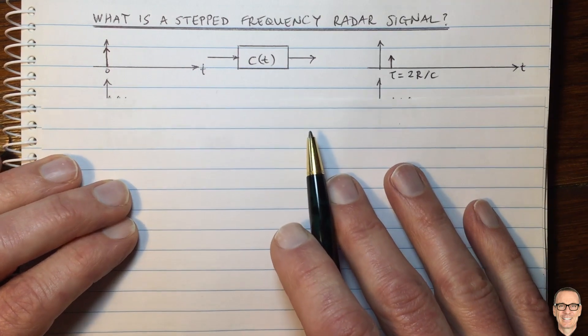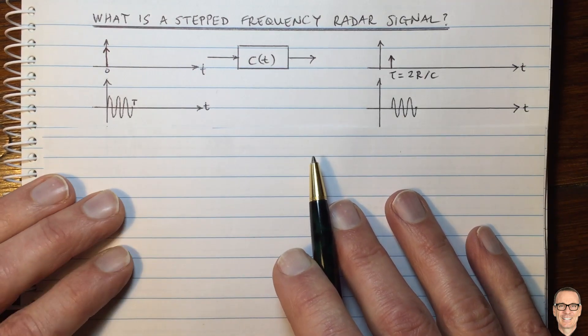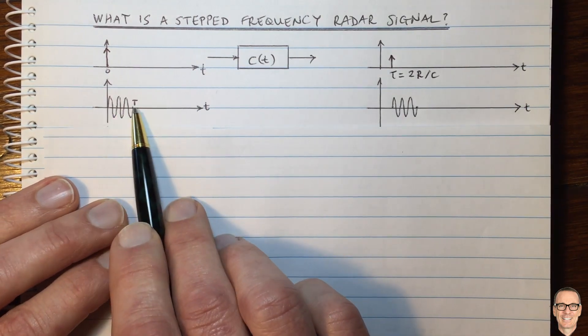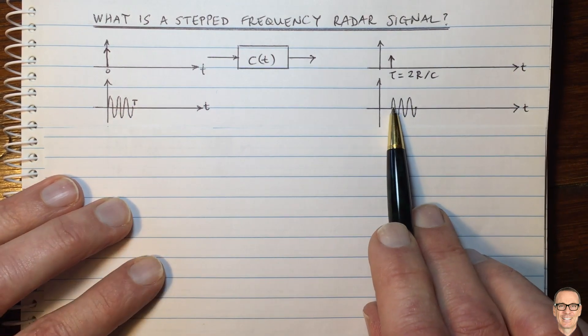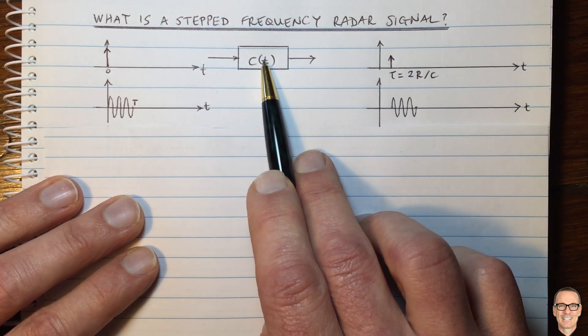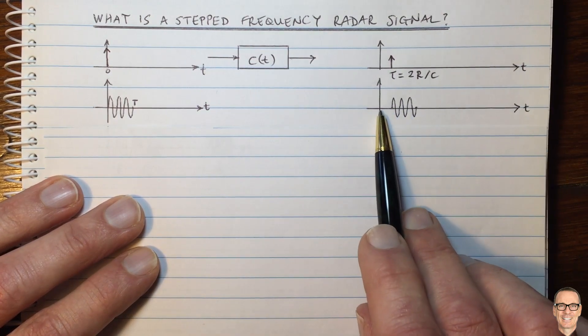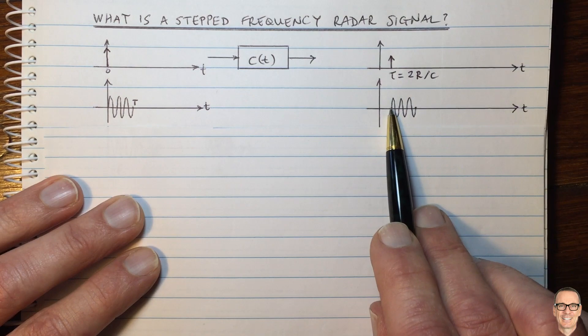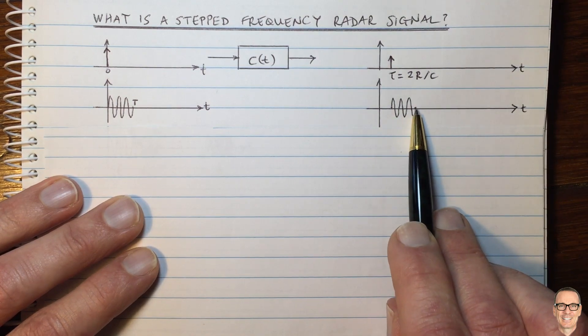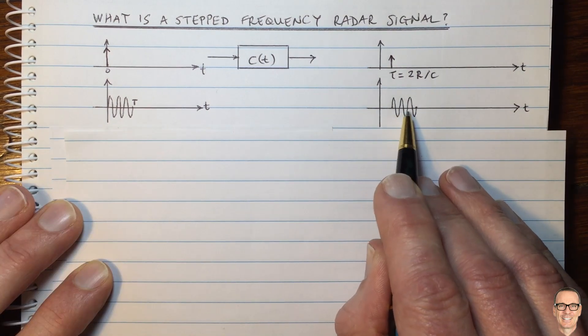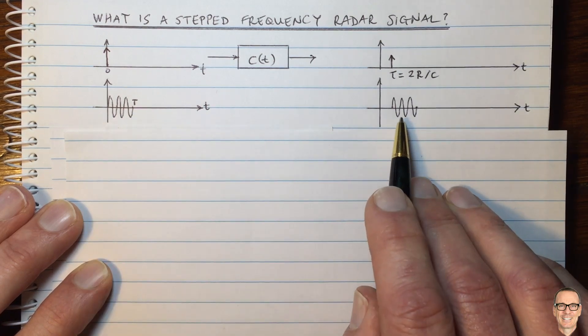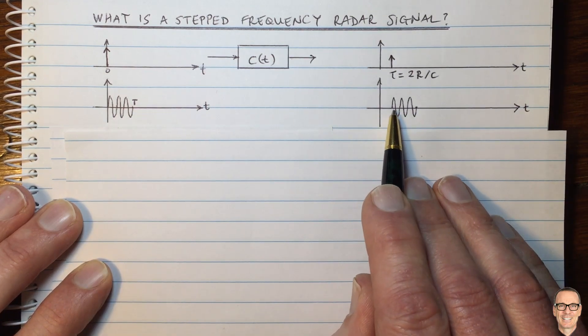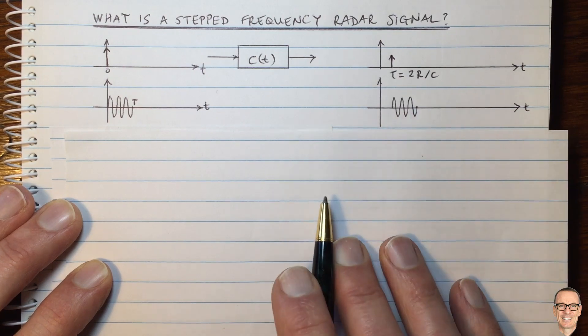So instead, let's think about sending a sine wave for a period of time. In this case, the sine wave will come out delayed because we're thinking about having one reflector, and it's going to be delayed by the same amount. At the receiver, you will match this up with the transmitted waveform and you'll be able to measure the phase of the returning signal.